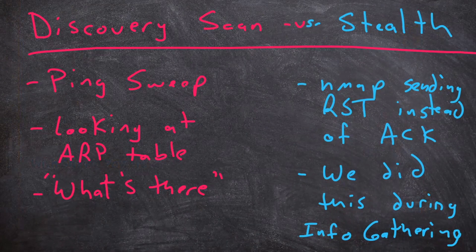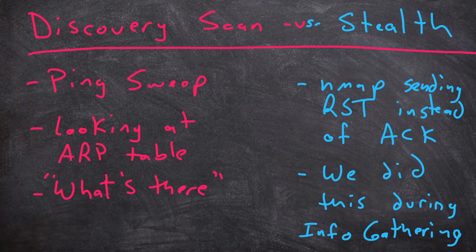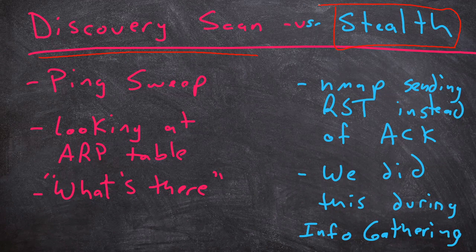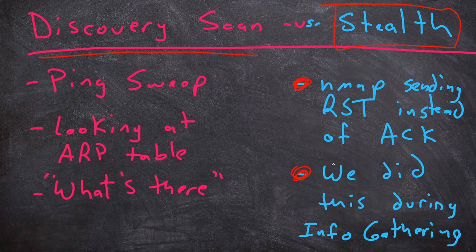We still need to be aware that there are different types of scanning that we can do, because even though we're now to the point where we're looking for actual vulnerabilities, we still might want to be stealthy, especially if we're trying to avoid detection. So if we're going to use tools like Nmap, we need to be aware that it'll do things like send a reset packet instead of an ACK packet when we're doing some TCP based scanning. We looked at this in the info gathering section. The actual thought process isn't different, but it's important that you are conscious of how you're going about scanning a network when you're doing vulnerability scanning, just like when we were doing discovery scanning.